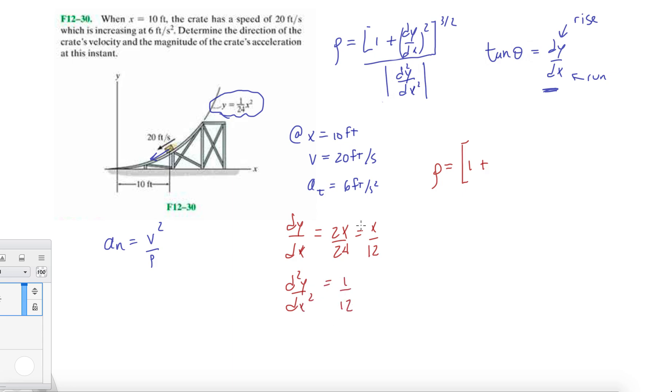We can plug that in now: 1 plus x over 12 squared to the three halves divided by 1/12. Now we're calculating this rho at x equals 10 feet. That means 1 plus 10 over 12 squared to the three halves divided by 1/12. When we crunch the numbers, we get 26.47 feet. That is our radius of curvature.